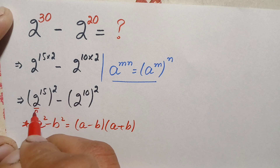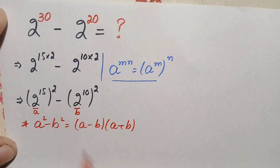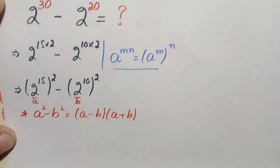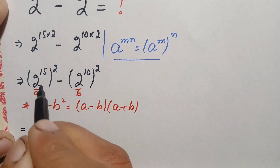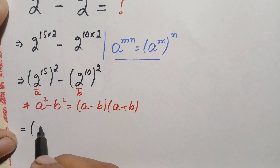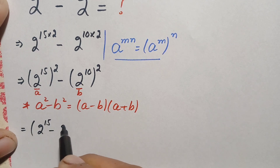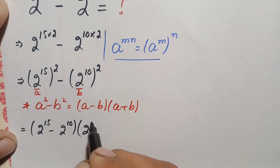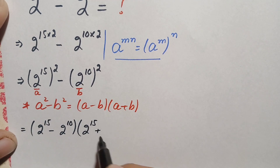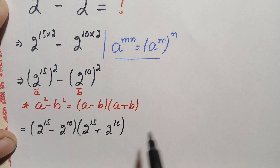Here a is 2 raised to power 15, and b is 2 raised to power 10. So this equation becomes: 2 raised to power 15 minus 2 raised to power 10, times 2 raised to power 15 plus 2 raised to power 10.